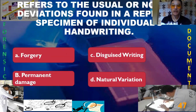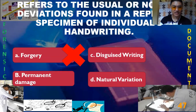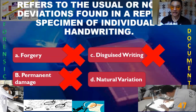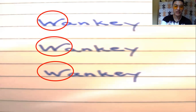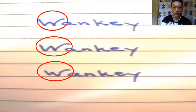The next question refers to the usual or normal deviations found in repeated specimens of an individual's handwriting. It is not a forgery, not a permanent damage, and not disguised writing — it is simply a normal deviation. Thus, it is natural variation. For example, looking at handwriting samples, the execution of the letter W shows different terminal strokes made by the same person, all genuine. The variation in ending strokes demonstrates natural variation.